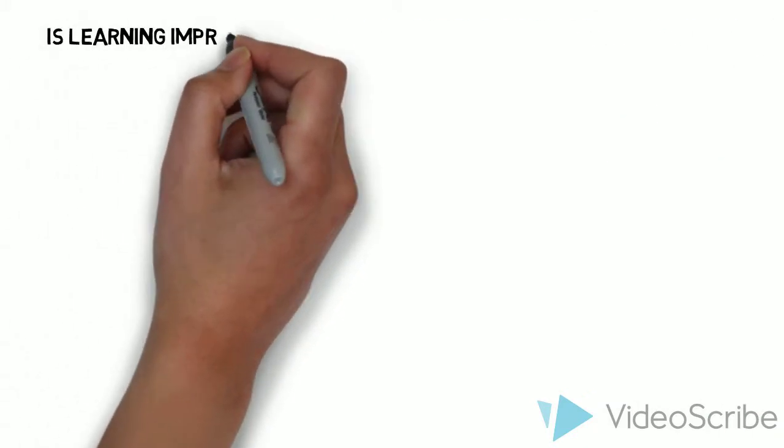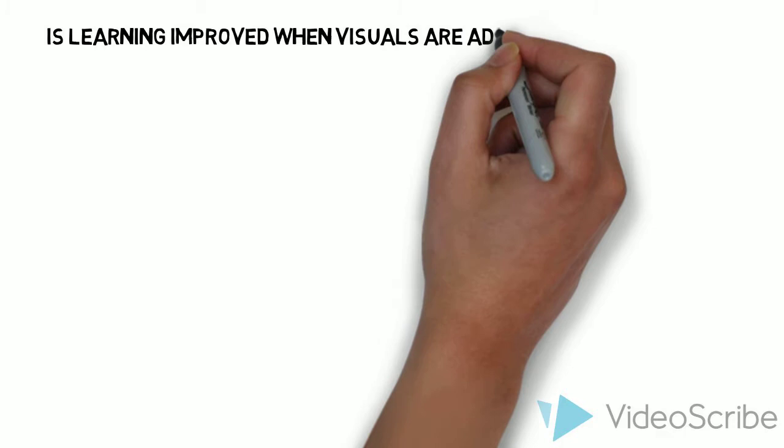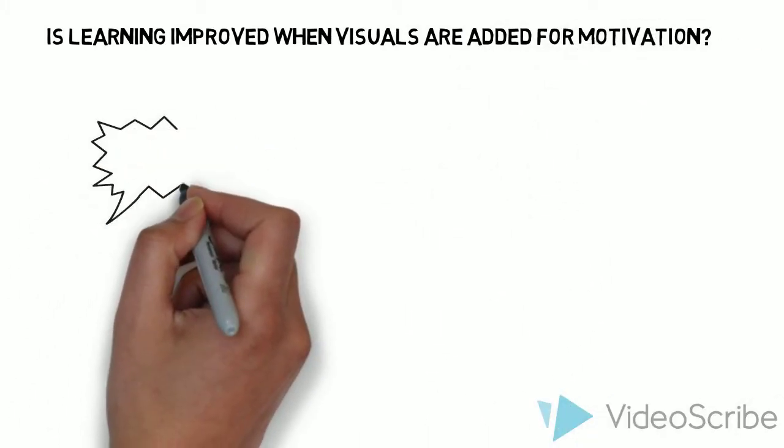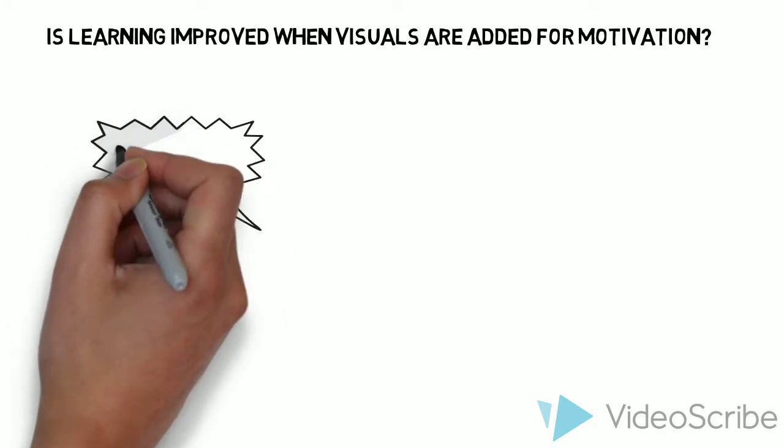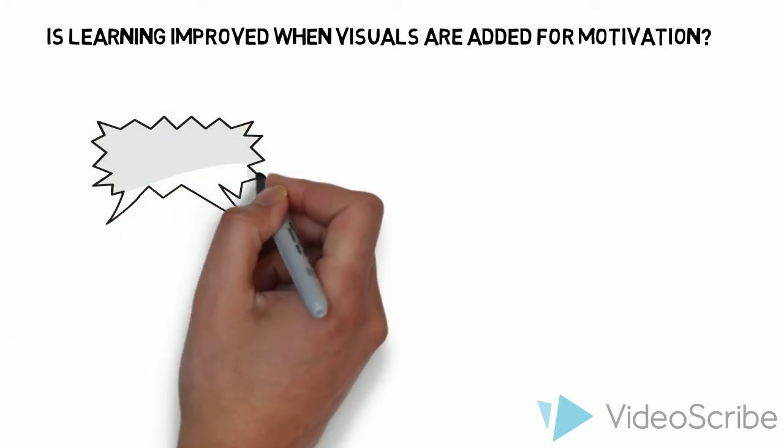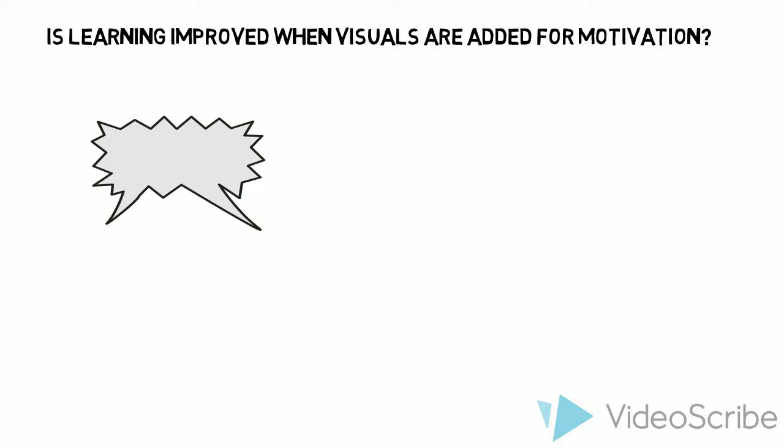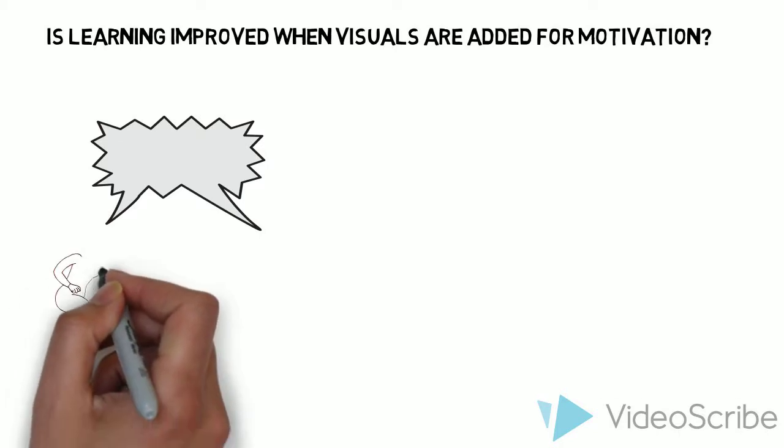Our next question, is learning improved when visuals are added for motivation? Visuals, text, or audio that are added to increased motivation are called seductive details. This information is tangential to the learning objective and is designed to increase a learner's motivation.